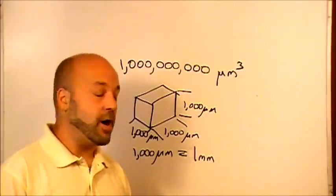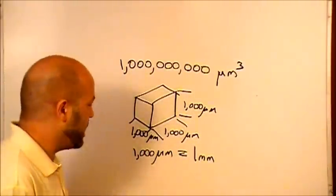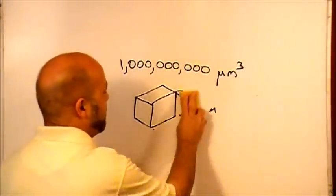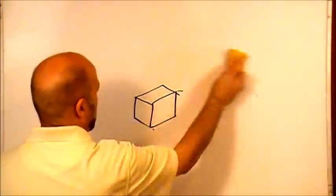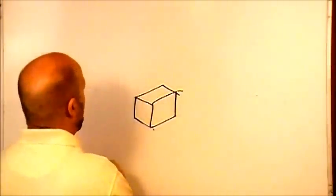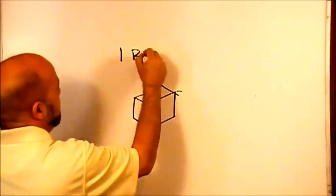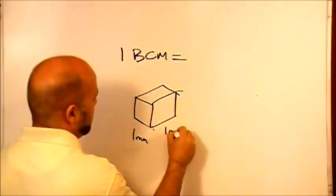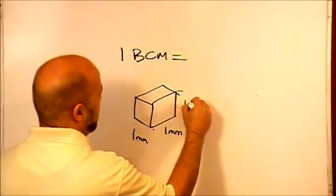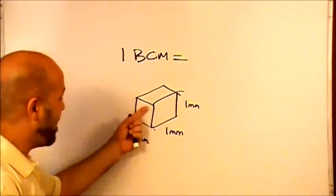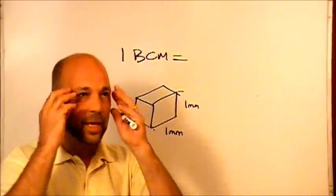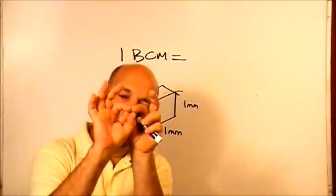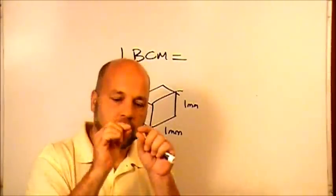That's how I kind of deduce that. So lo and behold, at the end of the day, here's what a BCM looks like: one BCM equals one millimeter by one millimeter by one millimeter cube. So now you can finally get an idea, have a visualization, that a BCM in volume is about the thickness of a dime in all directions. So it's a tiny little cube.